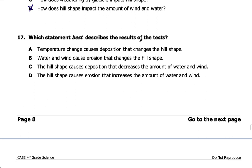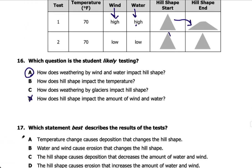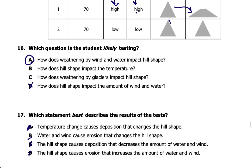Number seventeen: which statement best describes the results of the test? Temperature change causes deposition — no, I don't see any deposition in this chart. The hill shape causes deposition — no. The hill shape causes erosion that increases wind and water — no. The answer is B: water and wind cause erosion that changes the hill shape. That is definitely true based on the data in the chart.